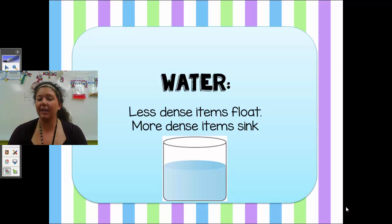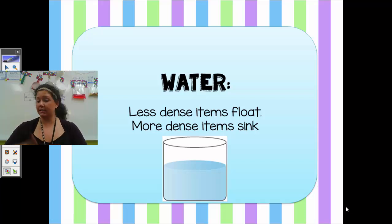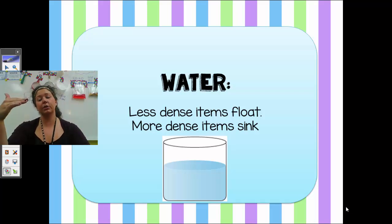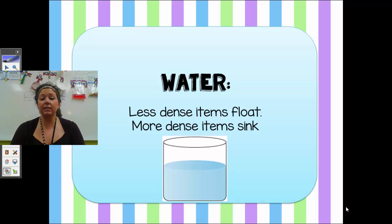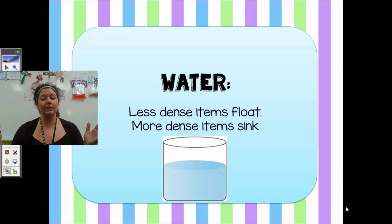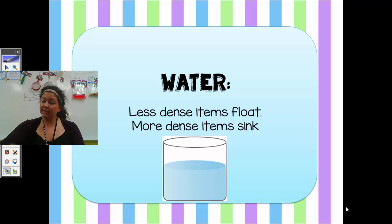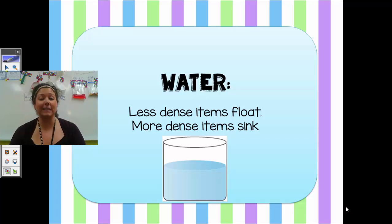Another way I can separate a mixture is by simply using water. We talked about density — whether something sinks or floats. Less dense items are going to float, and more dense items are going to sink. So if I have a mixture of two solids and I know one is less dense than water and one is more dense than water, I can pour water in there and the less dense item will float to the top, the more dense item will sink, and my mixture will be separated.